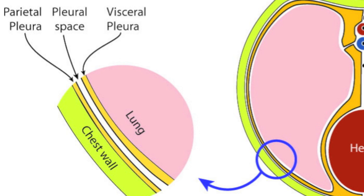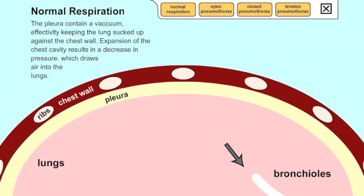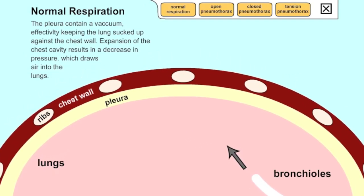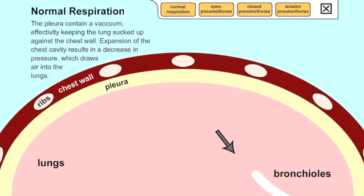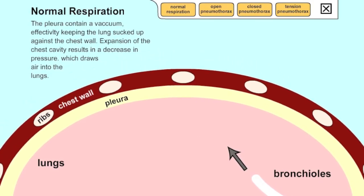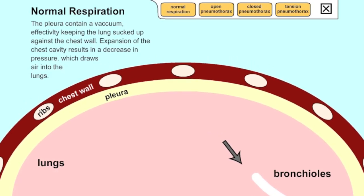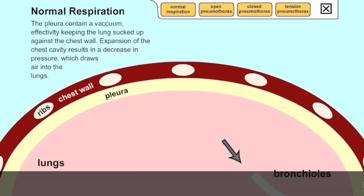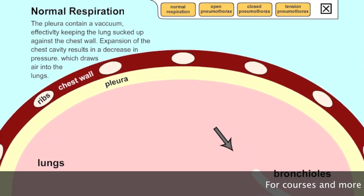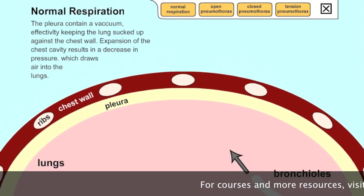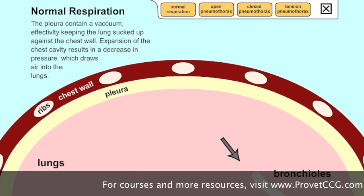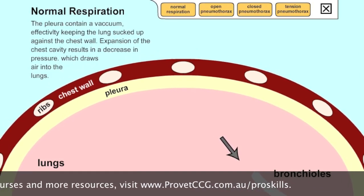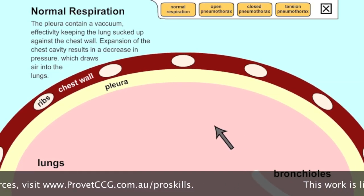Let's have a look at normal respiration. The pleura has a small amount of fluid and also a vacuum, and this vacuum effectively keeps the lungs sucked up against the chest wall. It is the vacuum that enables us to breathe — for those lungs to inflate and deflate — keeping a seal and allowing gaseous exchange. Expansion of the chest cavity results in a decrease in pressure, which draws air into the lungs.